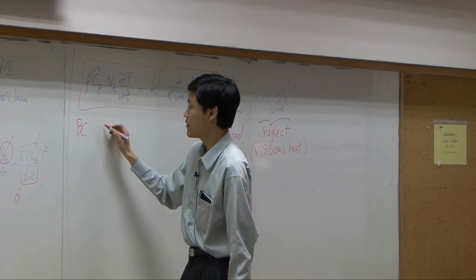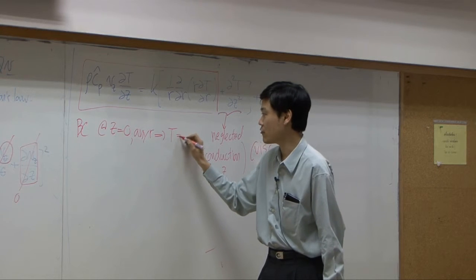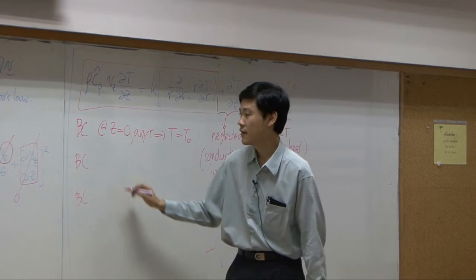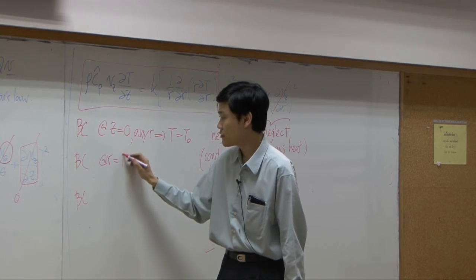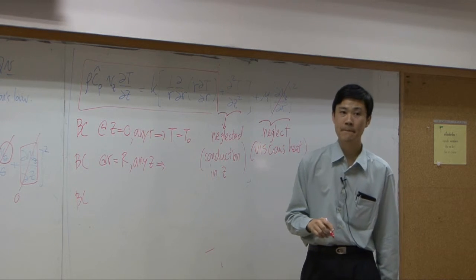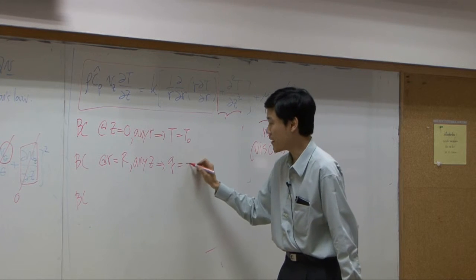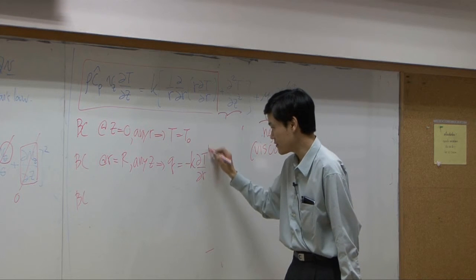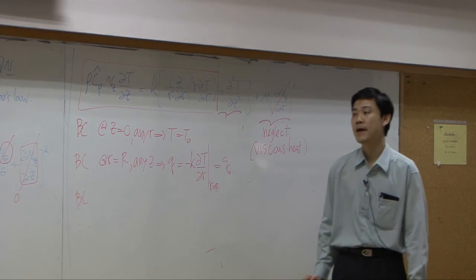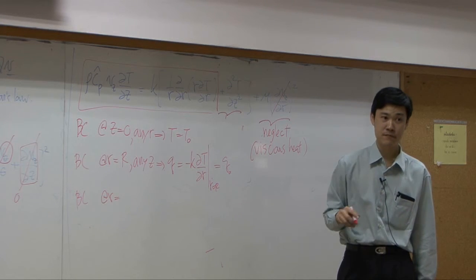Our boundary conditions: the first one, at Z equal to zero for any R, T equals the input temperature T0. Then two more boundary conditions with respect to R. At R equal to capital R, for any Z, Q is constant — so Q equals minus K times dT/dR at R equal to R, which equals the constant flux Q0.